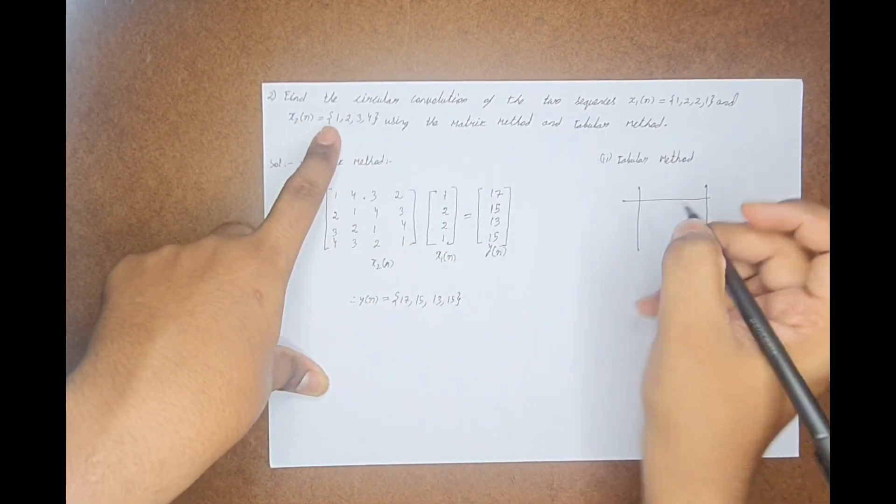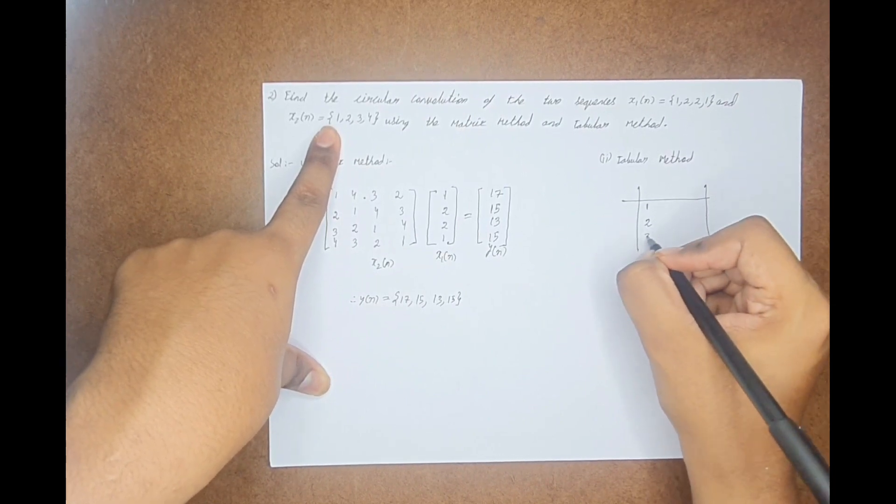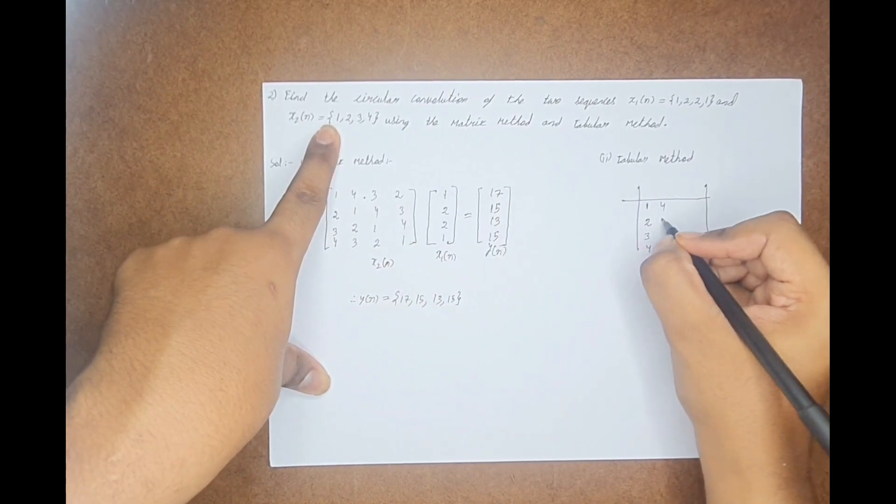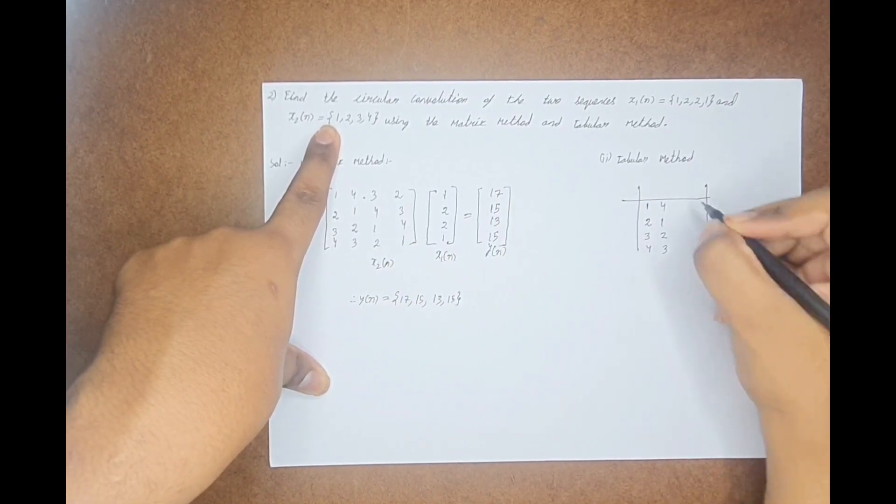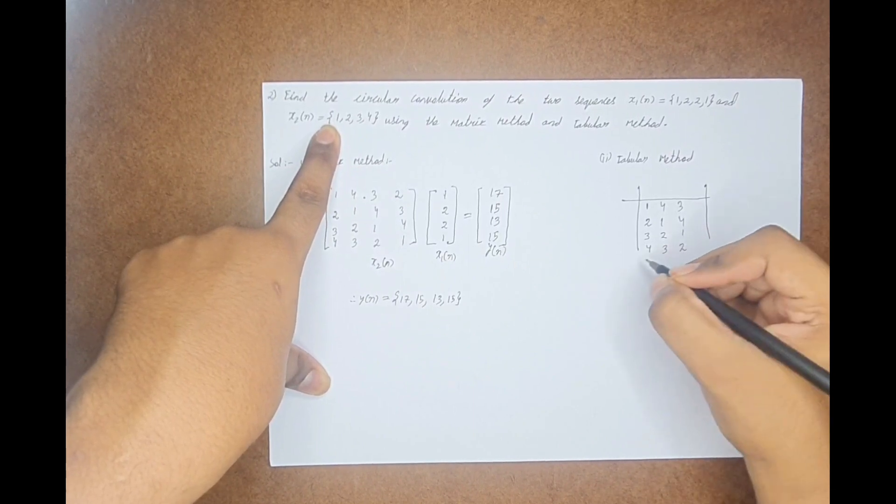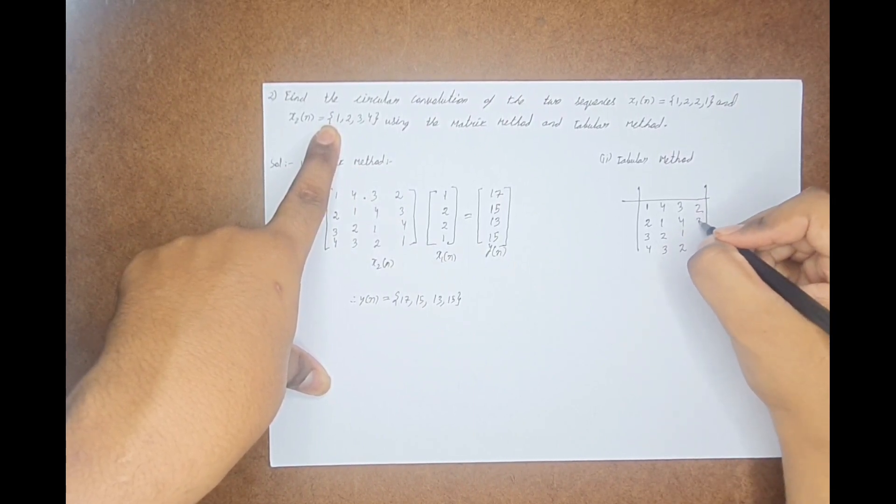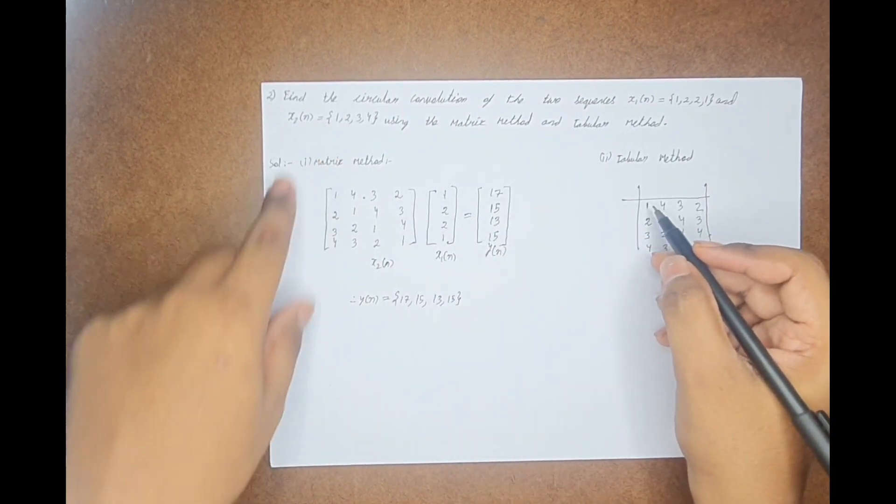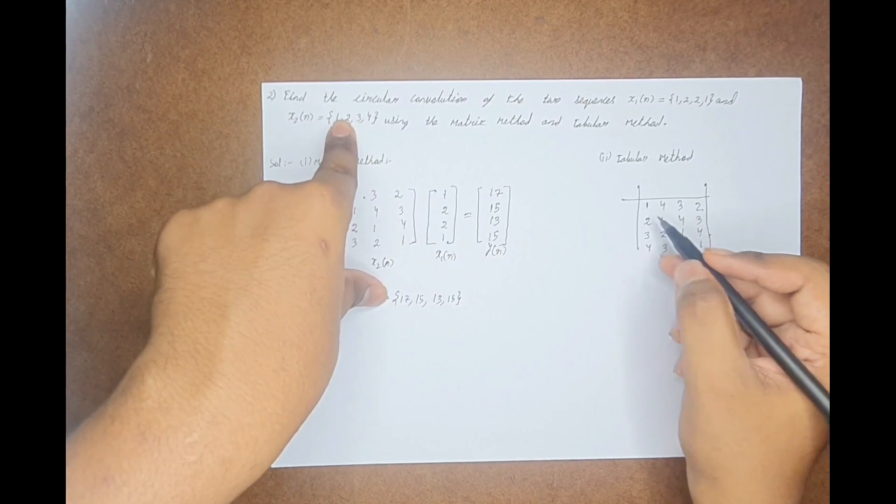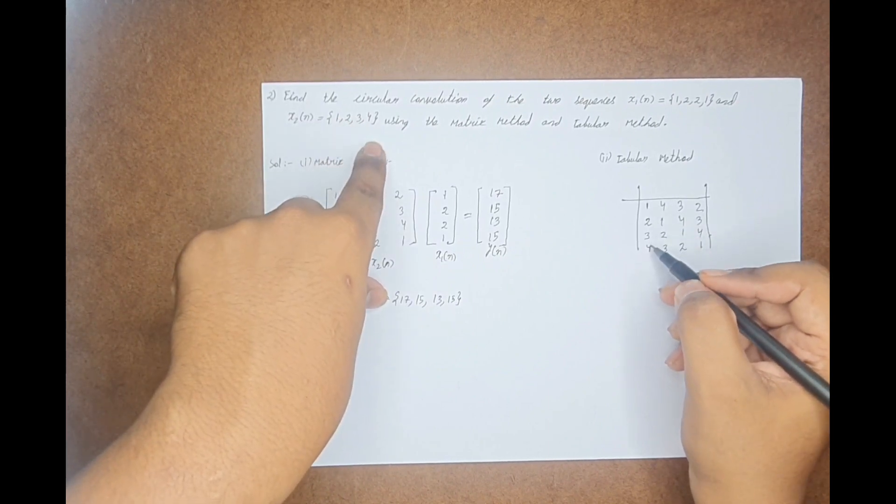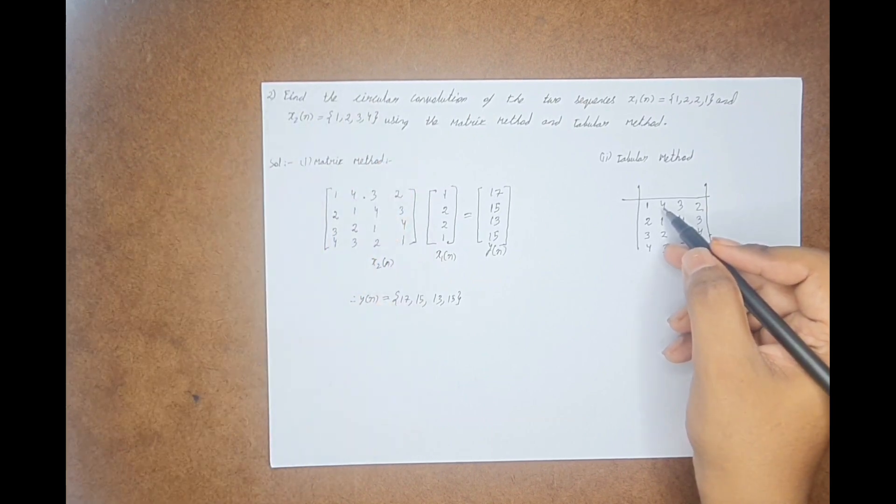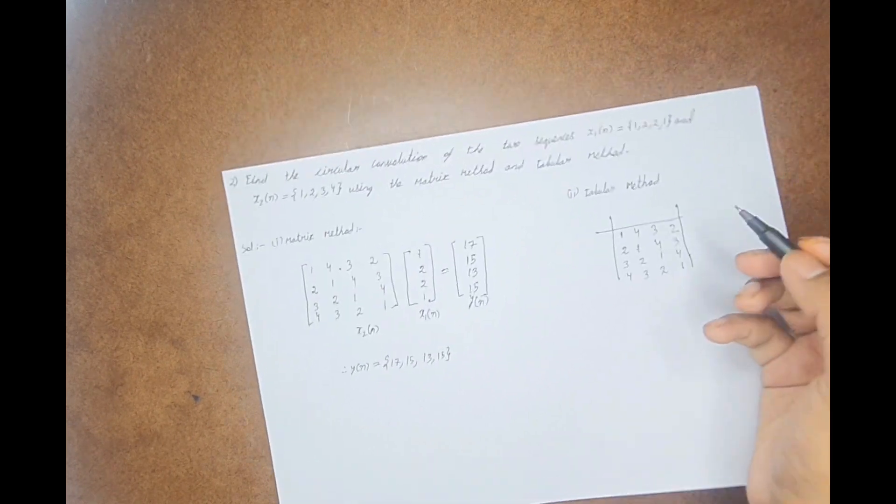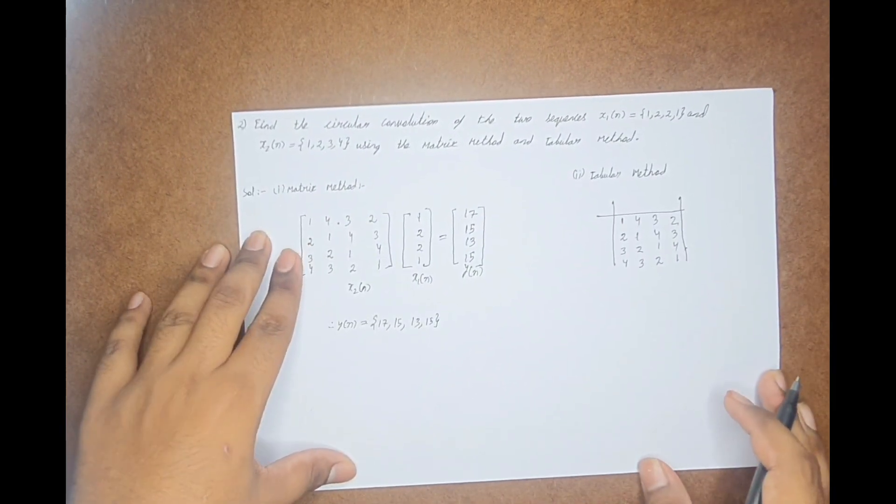Take x2(n) and write the values like this: 1, 2, 3, and 4. Just like in the matrix method, you need to transpose this and write them in the next row. Again transpose, we get 4, 1, 2. And again transpose, we get 2, 3, 4, 1. That means, first you write x2(0), x2(1), x2(2), and x2(3). Next, you write x2(3) followed by x2(0), 1, and 2. Similarly in the next row, and you get the value like this.